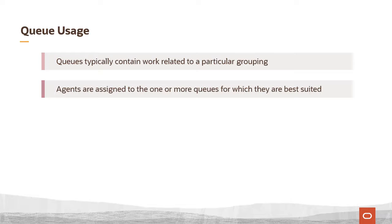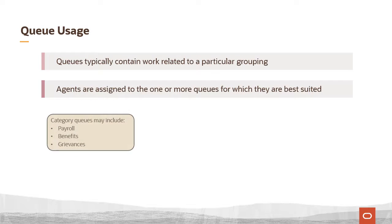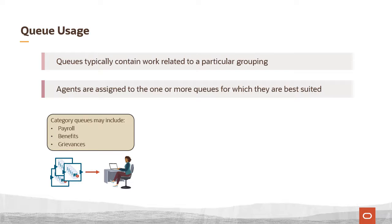Agents are assigned to one or more queues for which they are best suited, based on specialized training, length of experience, or other factors. Examples of category queues may include queues specific for payroll, benefits, or grievances.